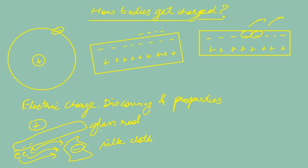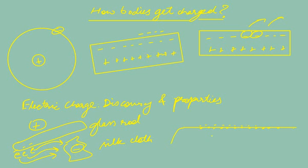These electrons moved from the external atoms at the surface of the glass rod — the electrons which were loosely bound. Microscopically, the surface of the glass rod has atoms with electrons in their orbits and protons in the nucleus. Protons do not exchange during common processes like rubbing. During rubbing, electrons detached from their parent atoms and moved to the silk cloth, giving the silk cloth excess electrons and making it negatively charged, while the glass rod became positively charged. This is how bodies get charged.